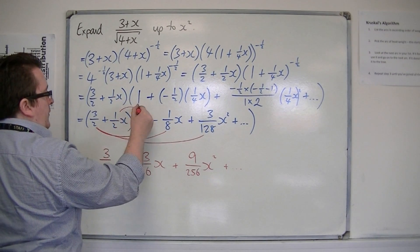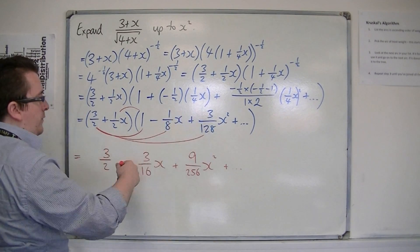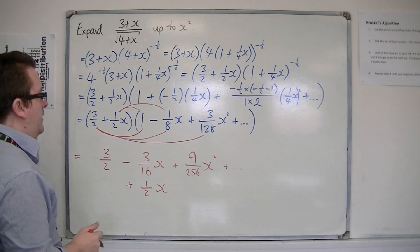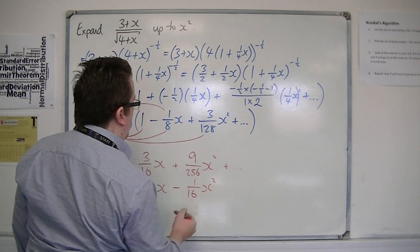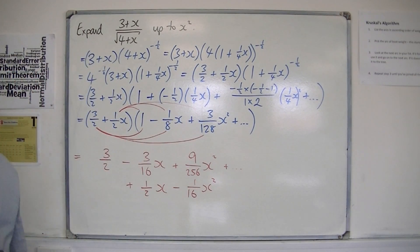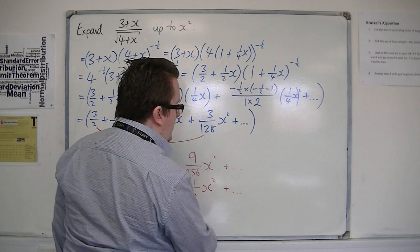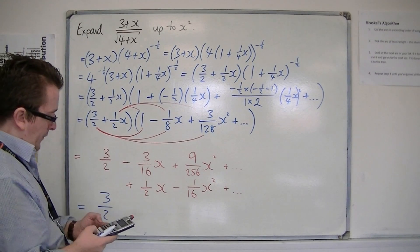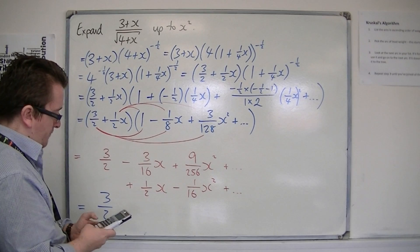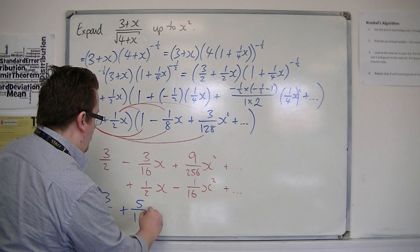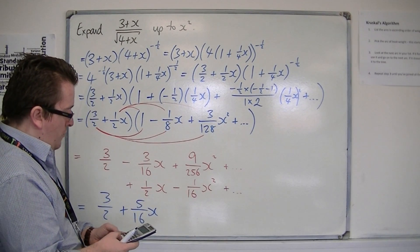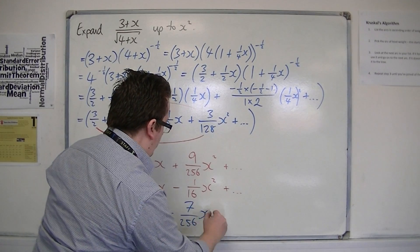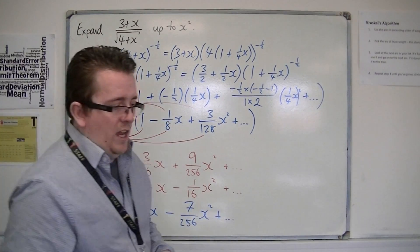Then I've got x/2 times 1, giving x/2. And then x/2 times −x/8 gives −x²/16. Then x/2 times (3/128)x² would give an x cubed term, so I don't need to worry about it. Collecting everything: 3/2, then −3/16 + 1/2 = 5/16, so + (5/16)x, and then 9/256 − 1/16 = −7/256, giving −(7/256)x squared. And there are other terms, but we only need to go up to the x squared term.